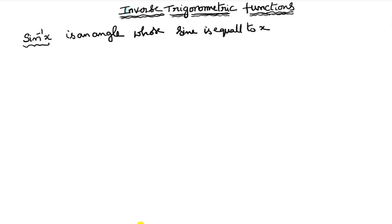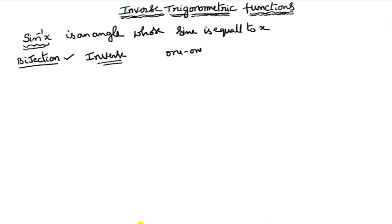The inverse of a function exists when it is a bijection. A function is a bijection only when it is both a one-one function and an onto function at the same time — that is, both an injection and a surjection.